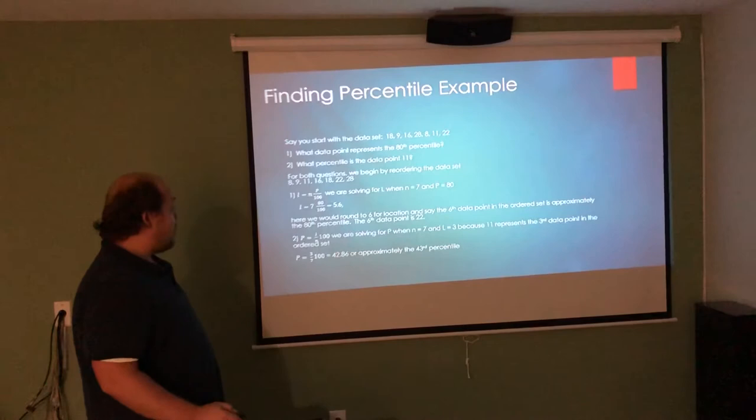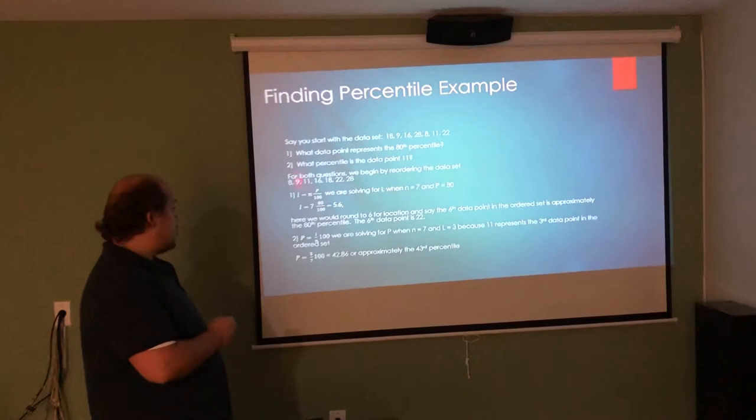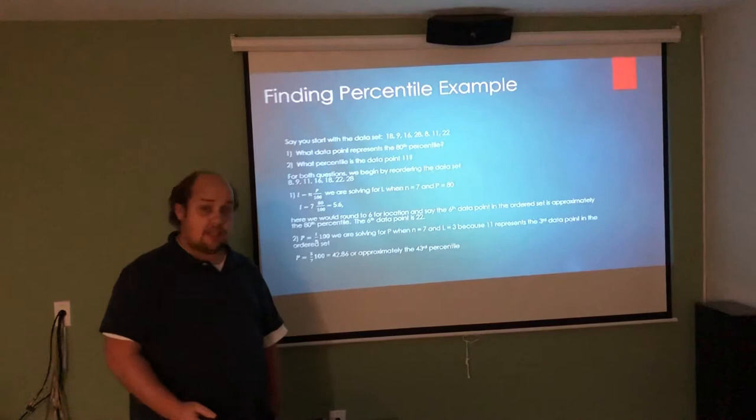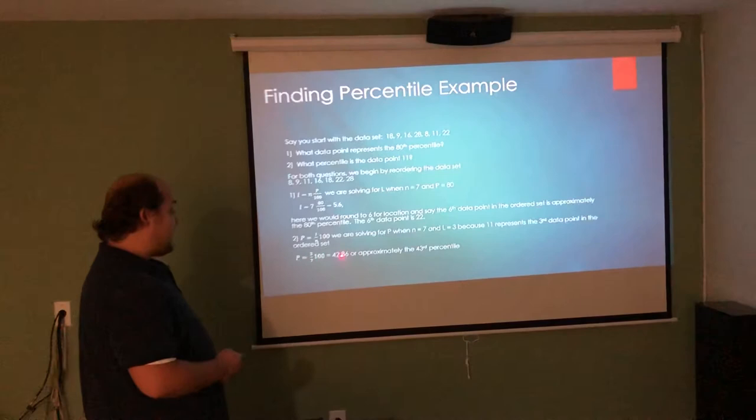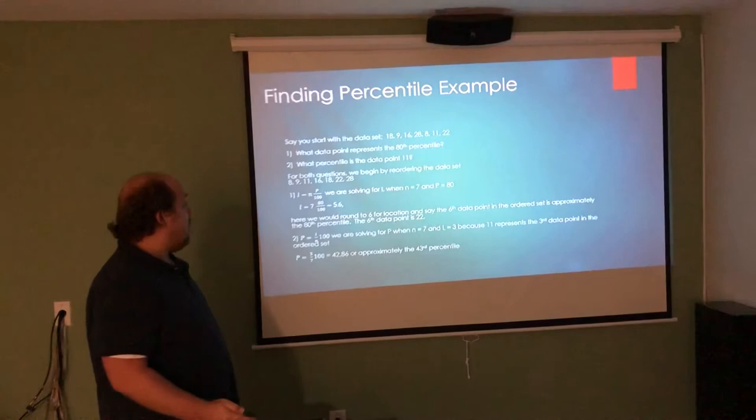When we look at it the other way, if we want to find what percentile is the data point 11, we first have to say what location is it in the ordered list. It's the third number in the ordered list. There's a total of 7 numbers in the list. So we put 3 divided by 7 times 100. 3 divided by 7 times 100 gives me 42.86, about the 43rd percentile.